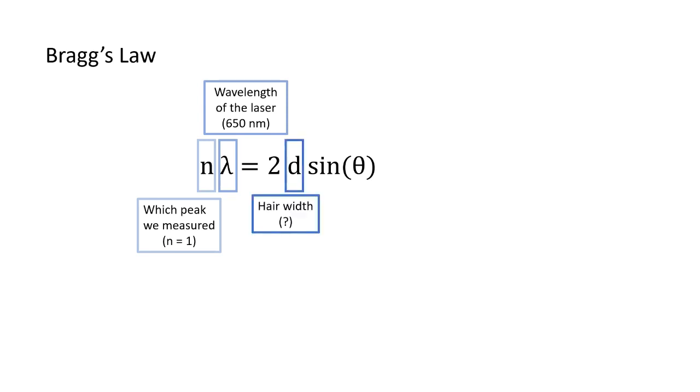Little d stands for the hair width. This is the value we want to find. The final part of this equation is the symbol theta, which represents the angle between the peaks in the diffraction pattern. We need to do a little more math to find theta from the values we measured.